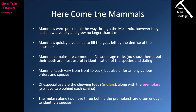Mammal teeth vary from front to back but they also differ among various orders and species. One of the diagnostic features for something to be considered a mammal is the presence of differentiated teeth — mammals have incisors, canines and molars. However the size and number of these teeth will vary between different orders and species. For instance, a cow will tend to have greater numbers of molars because it chews a lot of vegetation, while a beaver has very overdeveloped incisors at the front of the mouth.